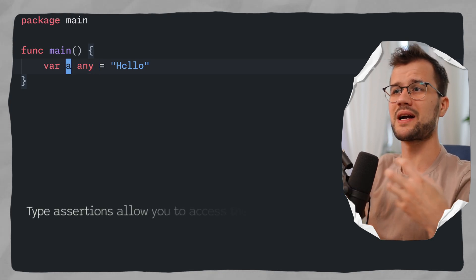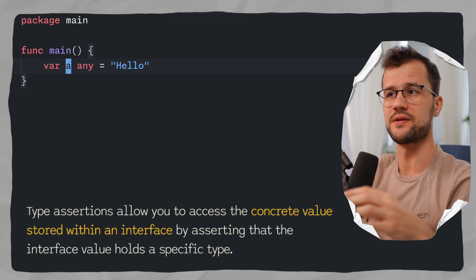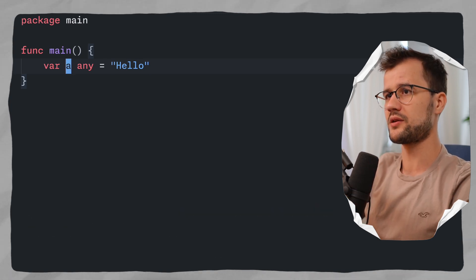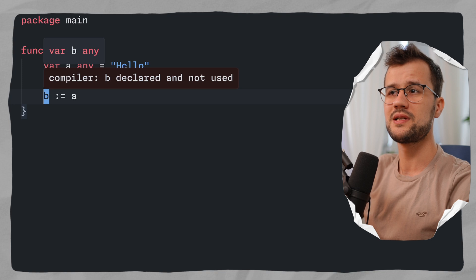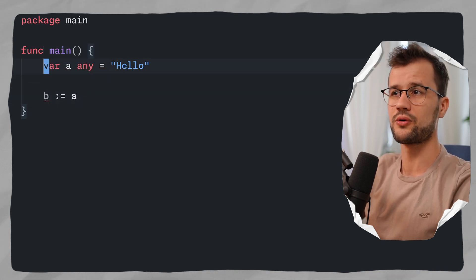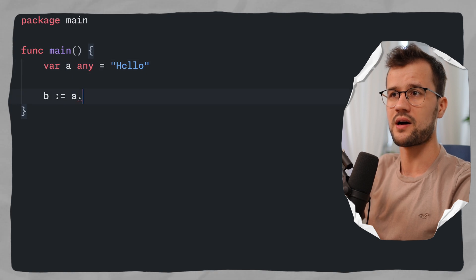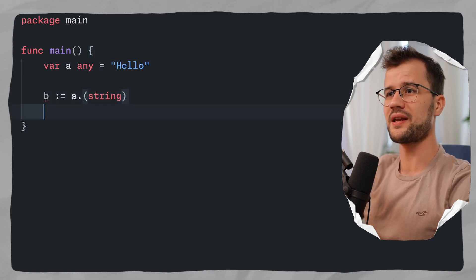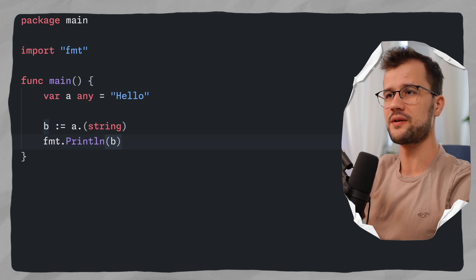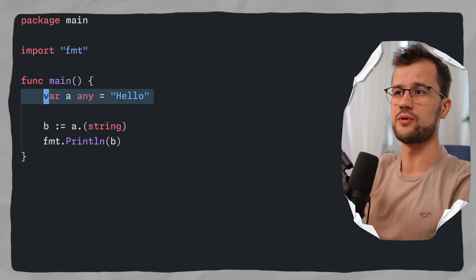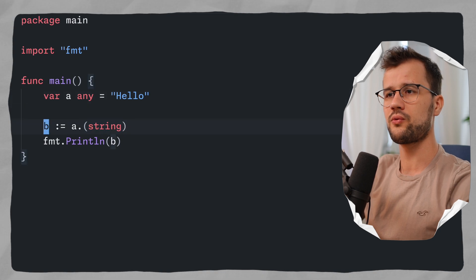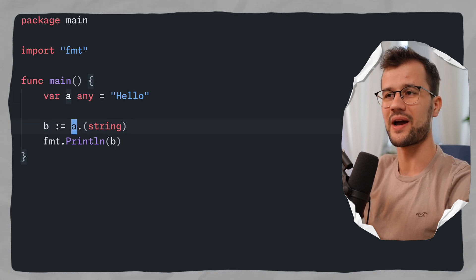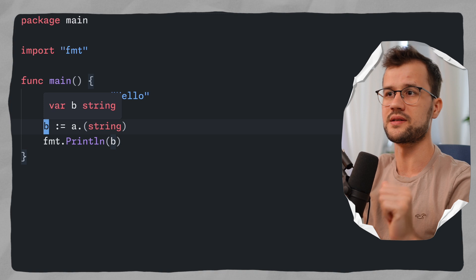Type assertions are a way to get the concrete value of an interface type. We can create a new variable 'b' and assign the value of 'a', and because we know 'a' is always a string, we cast 'a' to be a string. We then print 'b'. So 'a' is of type any containing 'hello', which is a string, and 'b' contains that value cast to string — so 'b' is definitely a string.